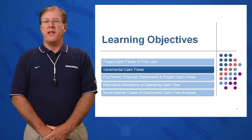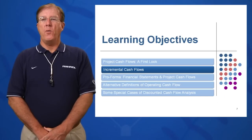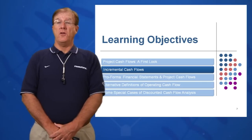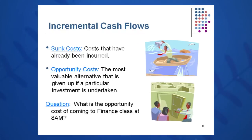Learning Objective 2 in session 10 covers what gets included in our incremental cash flows and what gets excluded. First, sunk costs: if we incurred some cost years ago that had a little bit to do with this project but hasn't been revisited recently, those costs have already been incurred and we do not include them in this project analysis. We exclude and ignore sunk costs.